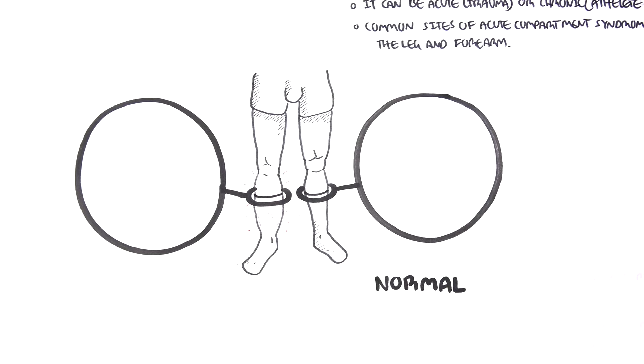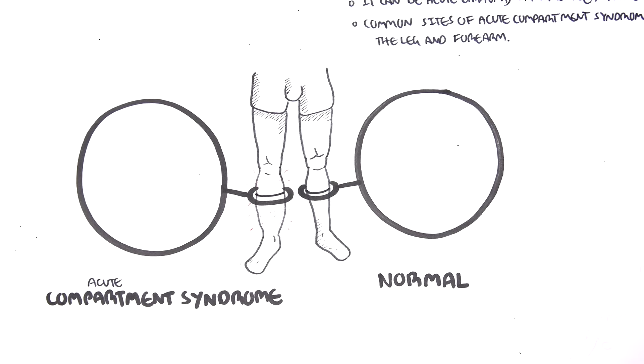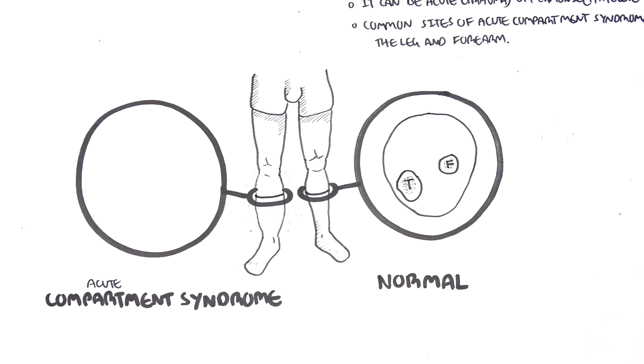So first let us look at normal compartments in a leg to get an idea. Here is a cross section of the leg. Here is the tibia bone in T and the fibular bone in F. These are the bones of the leg.